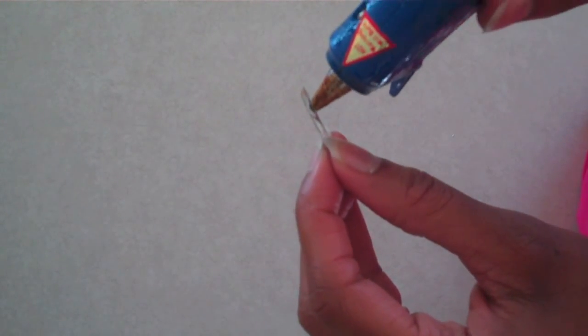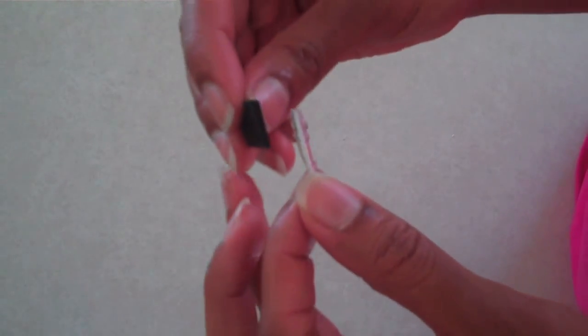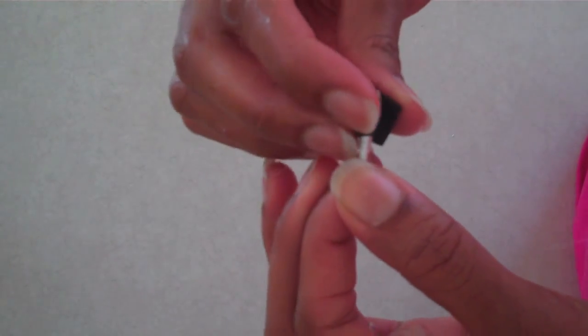Put a small amount of glue on the one end of your toothpick. Then take the piece of craft foam and wrap it around the end.